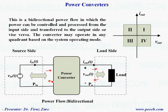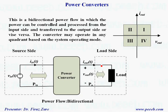In bidirectional power flow the system operates in four quadrants — the output voltage can be either positive while the current can be positive or negative, or the output voltage can be negative while the output current can be either positive or negative. The key point is that the power converter should be able to transfer power from input to output or from output to input.